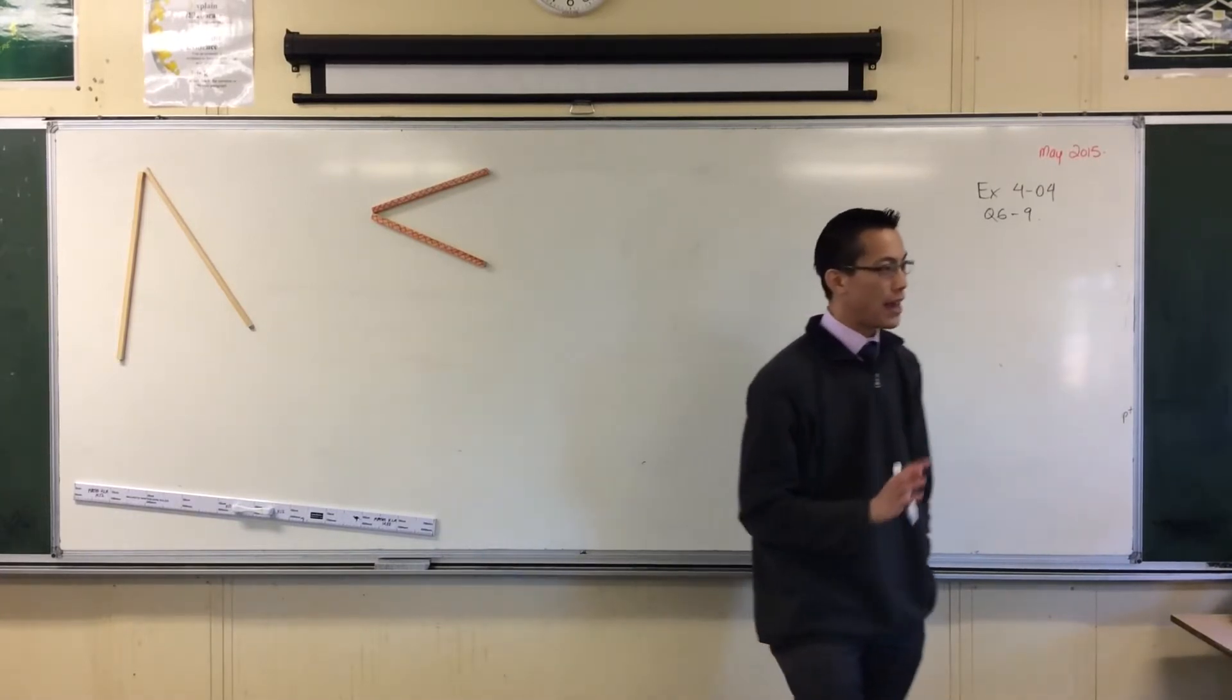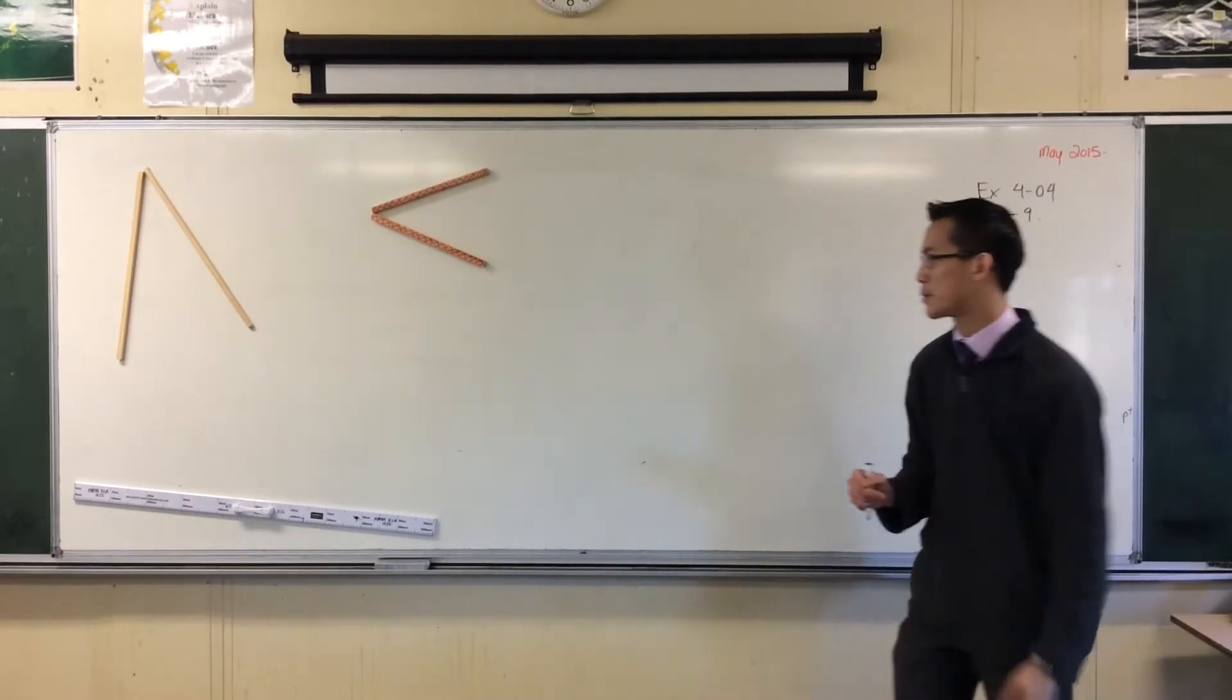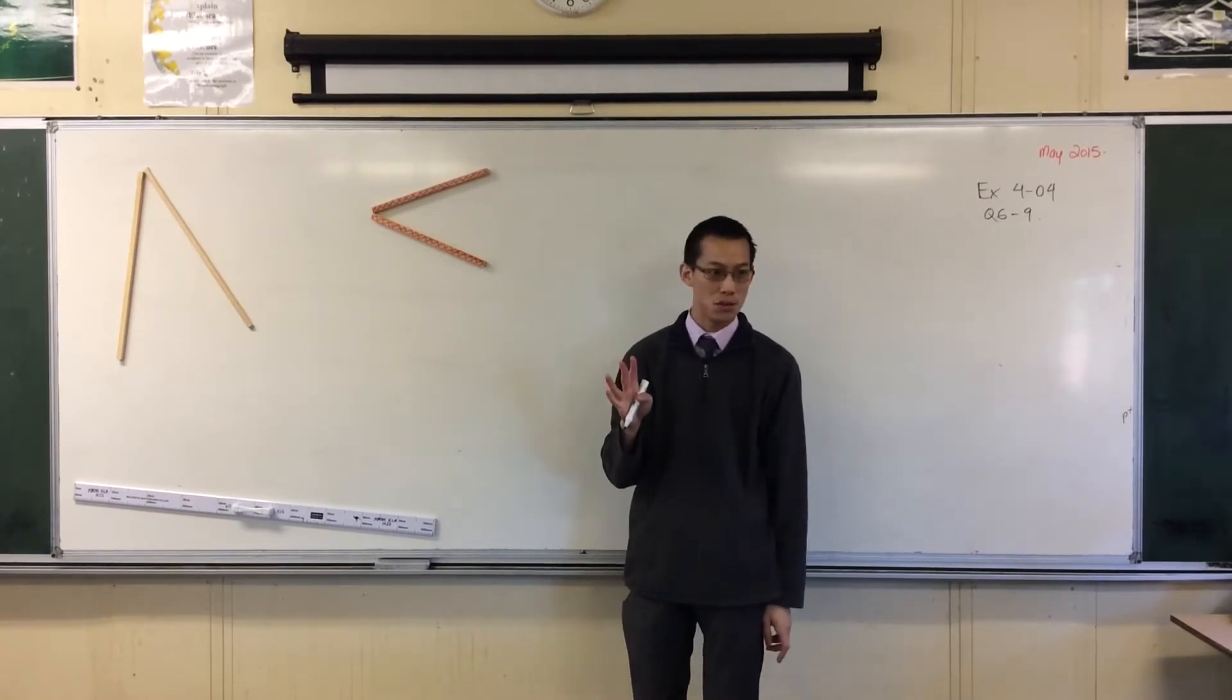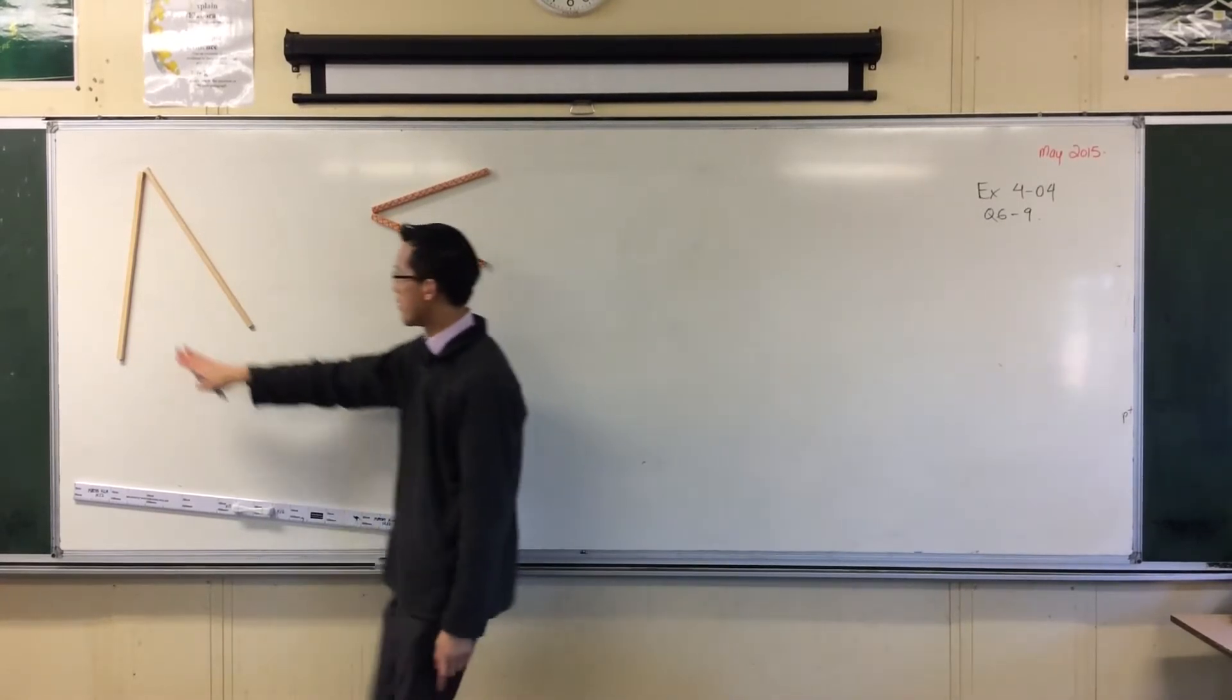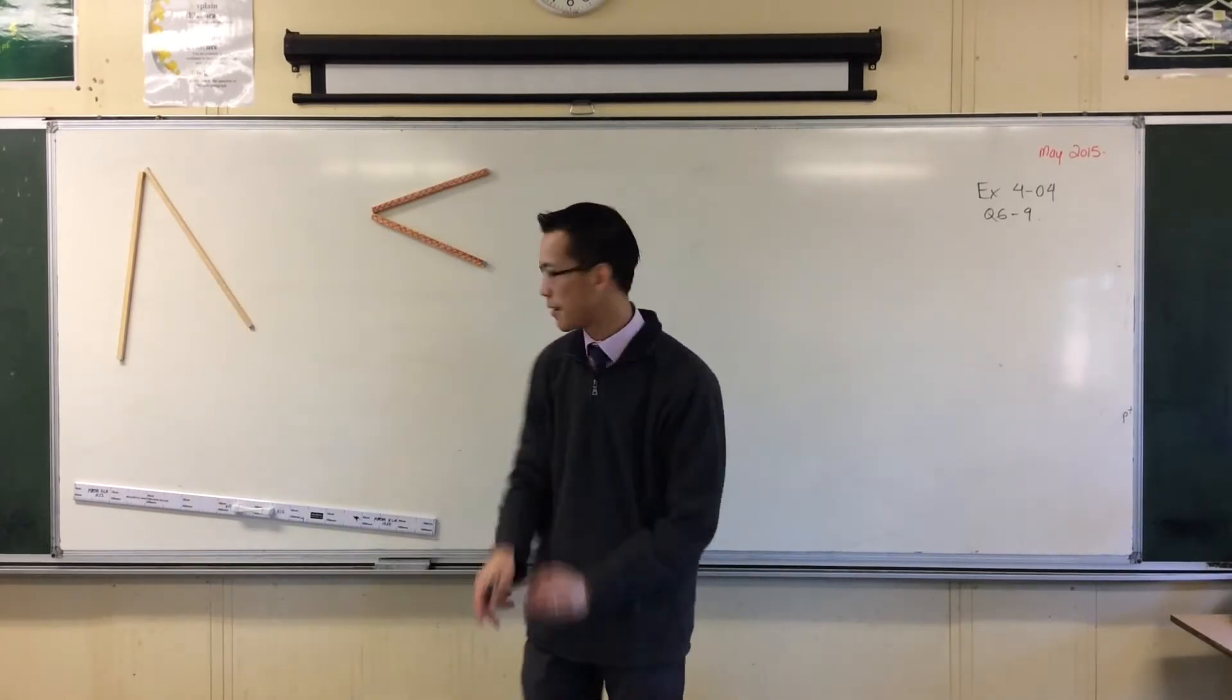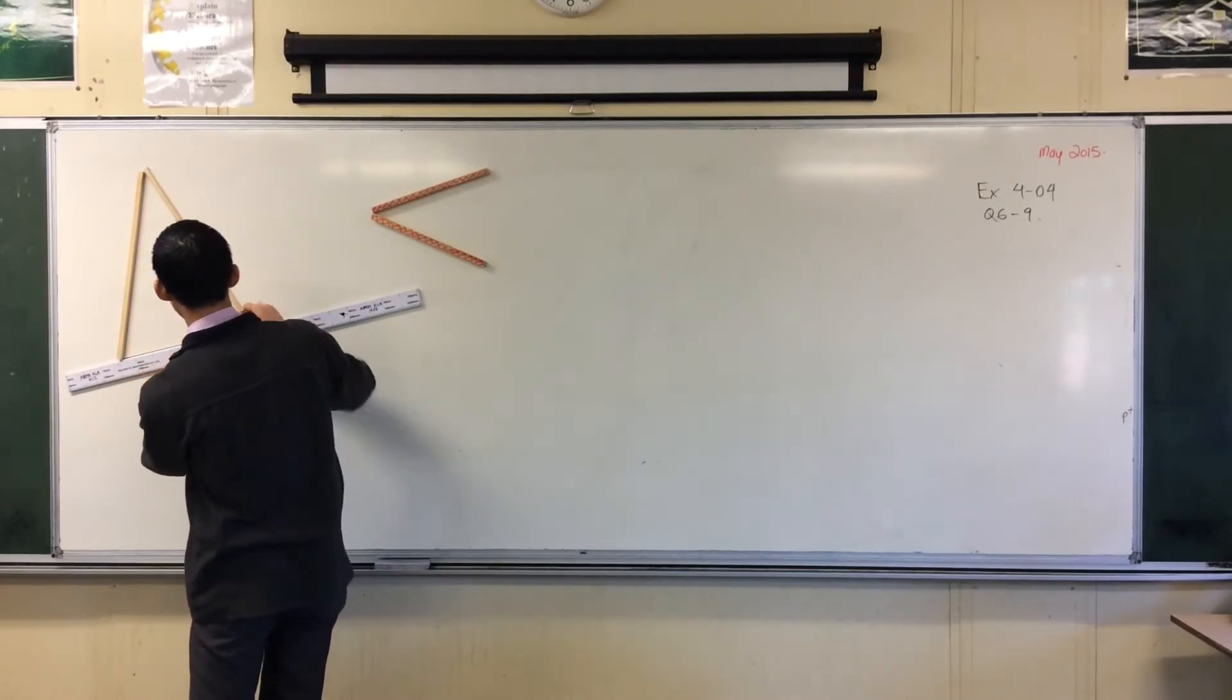So what I have done on the board is similar to what you have done with the blocks and in your books and on your laptops. So I have a couple of isosceles triangles here, or I almost do. I need to construct from these equal sides that third side. Let's just do it for this one. Here's an example.